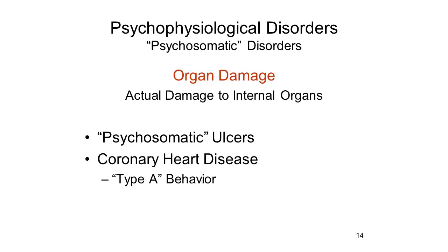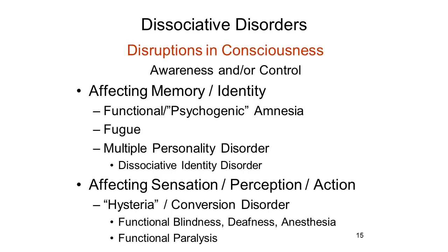Psychosomatic disorders occur where something about the mind affects the body. Dissociative disorders are very rare, but very interesting theoretically, in which there is a disruption of conscious awareness and or conscious control. Dissociative disorders come in two broad types: those that affect memory function and those that affect sensation, perception, or voluntary action.